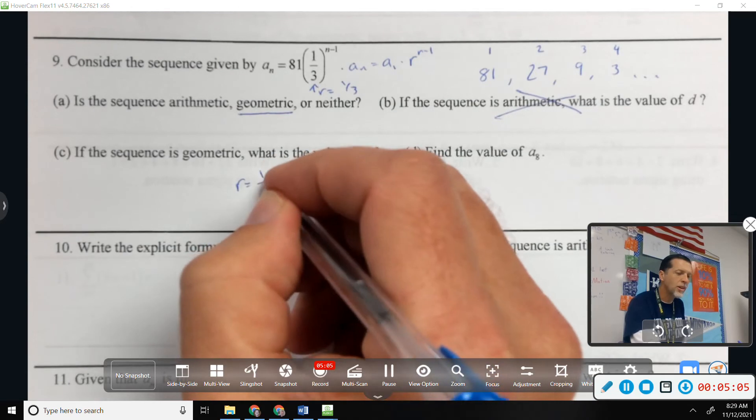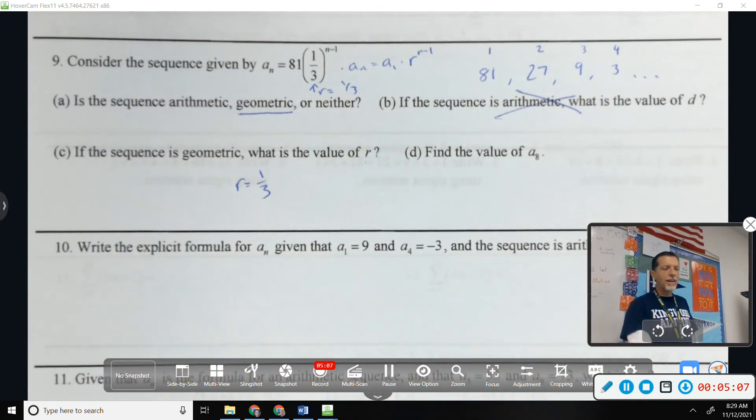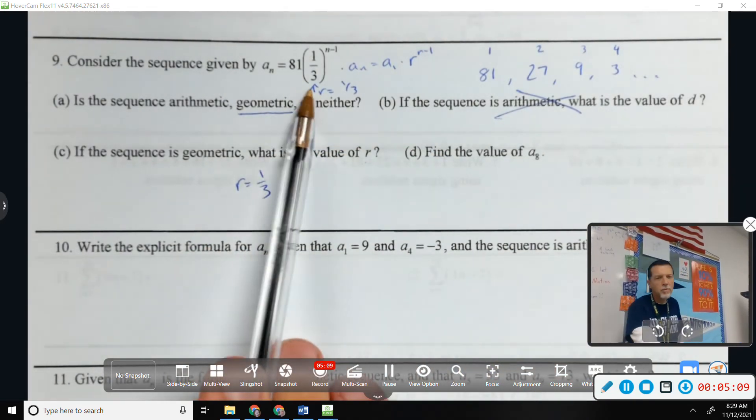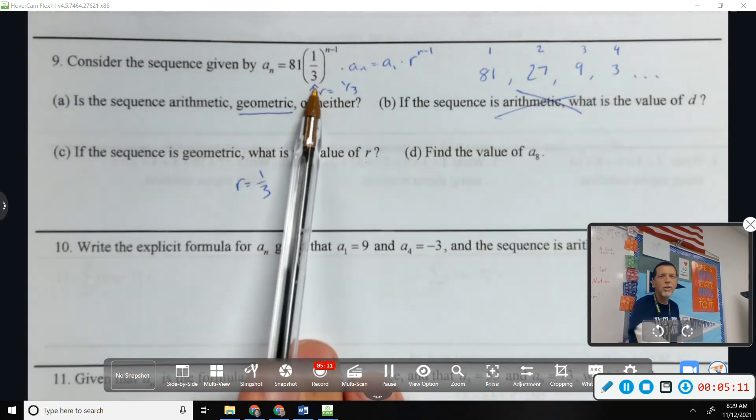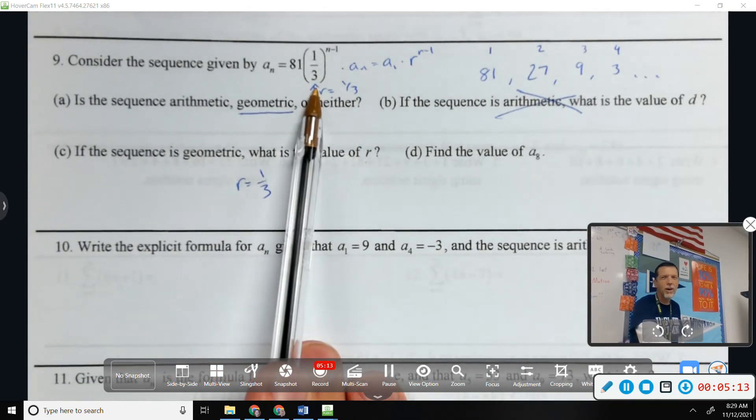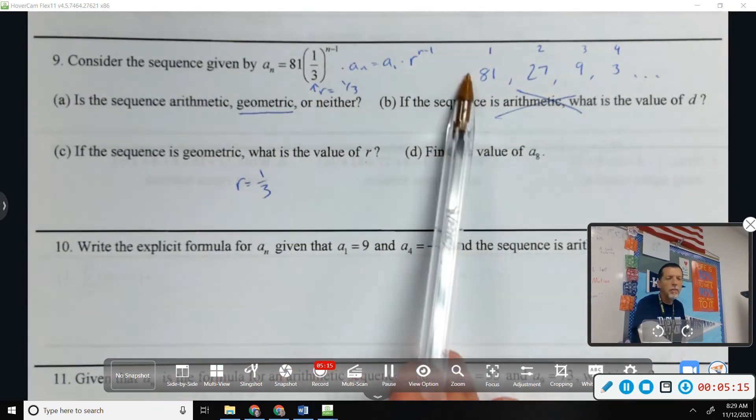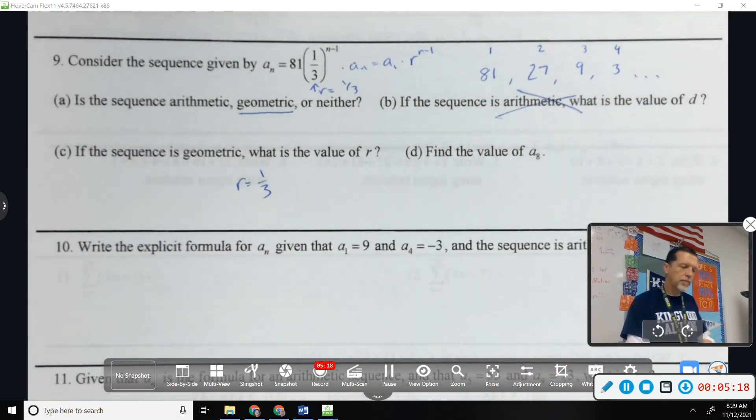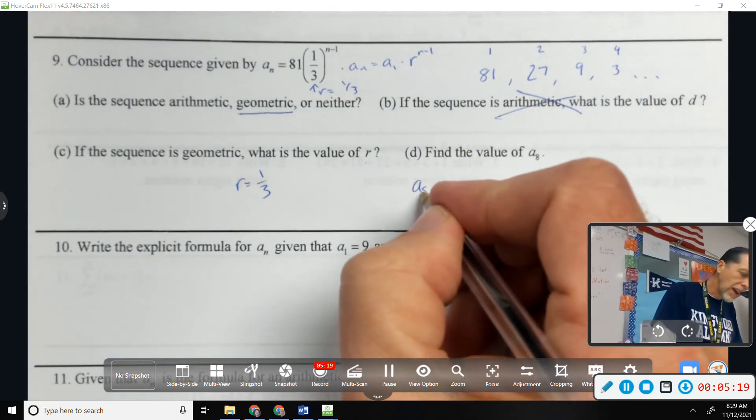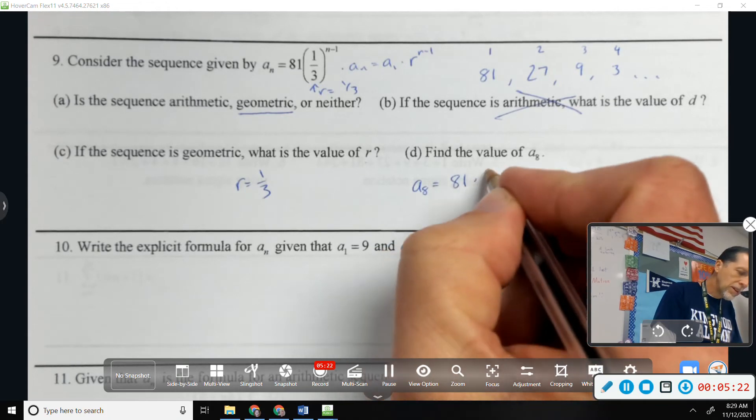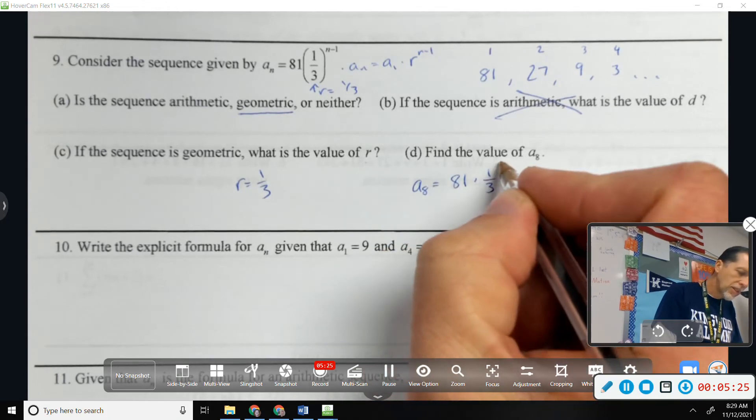Other people are like, I'm not sure what's going on. Let me write out some terms and then realize, oh, r is one third. And there's nothing wrong with either one of those. And it kind of depends on the problem. This would be about as easy as it gets to locate r. Sometimes you can't quite tell. But you can always write out terms. Find the value of a_8.